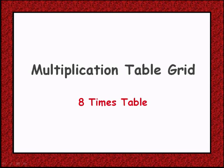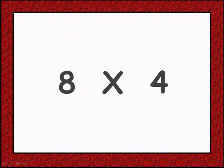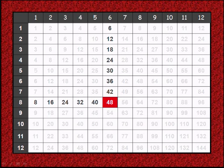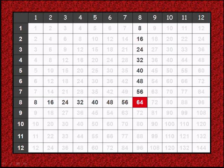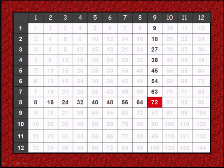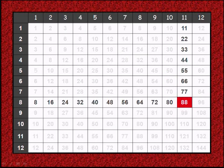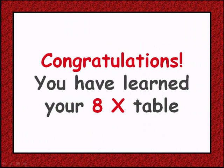Let's try our eight times table. Adding 8 times 1 gives 8, adding 8 times 2 gives 16, adding 8 times 3 gives 24, adding 8 times 4 gives 32, adding 8 times 5 gives 40, adding 8 times 6 gives 48, adding 8 times 7 gives 56, adding 8 times 8 gives 64, adding 8 times 9 gives 72, adding 8 times 10 gives 80, adding 8 times 11 gives 88, adding 8 times 12 gives 96. Congratulations!